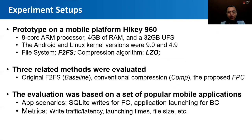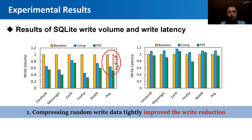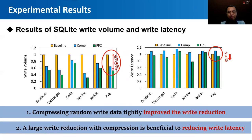We implemented the proposed FPC on an embedded development board for AOSP and evaluated related approaches: the baseline of original F2FS without compression, conventional sequential compression with a 4KB compression window, and our proposed FPC. Foreground compression was evaluated under the SQLite write scenario. FPC greatly reduced the write volume of SQLite by about 48% compared to baseline, and also outperformed conventional compression due to better space efficiency. FPC also reduced average write latency compared to baseline, meaning the benefit of reduced write amount outweighed the compression timing cost.